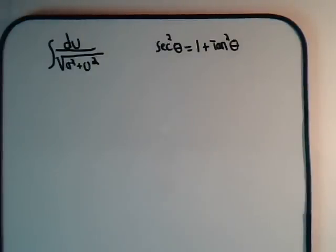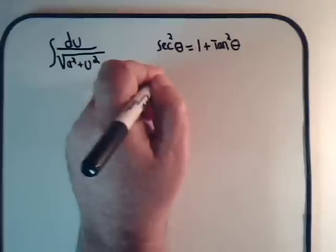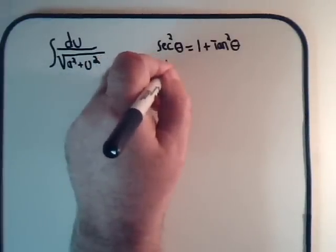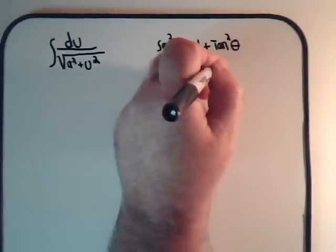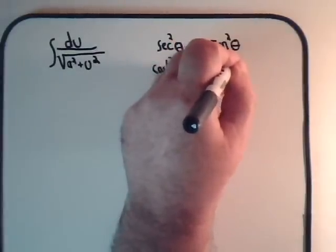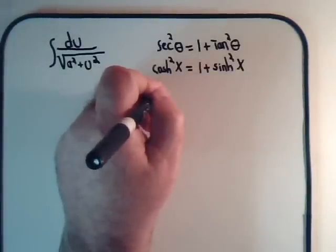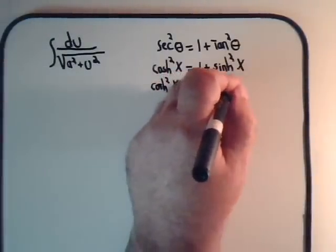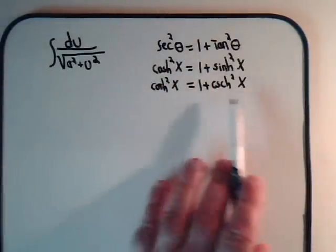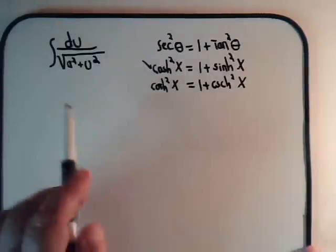Now that you've been working with hyperbolic functions and are familiar with some of their basic identities, you would also realize we have this: the hyperbolic cosine squared of x equals 1 plus the hyperbolic sine squared of x. That's in the same general form — a constant plus a variable squared. There's also the hyperbolic cotangent squared of x, which equals 1 plus the hyperbolic cosecant squared of x — also in the same general format. In this video, we're going to use this substitution to solve this integral.